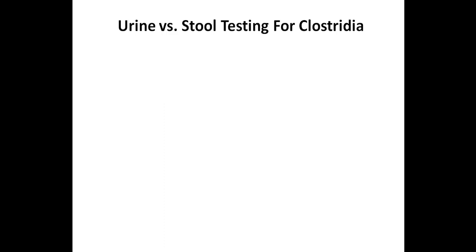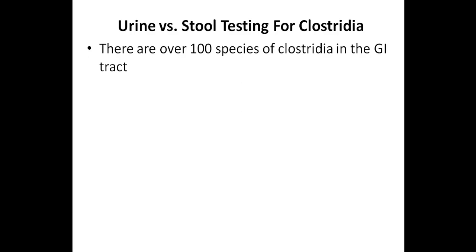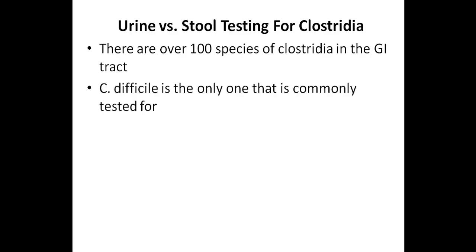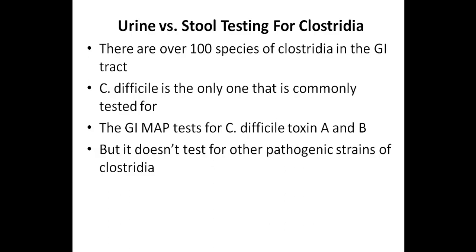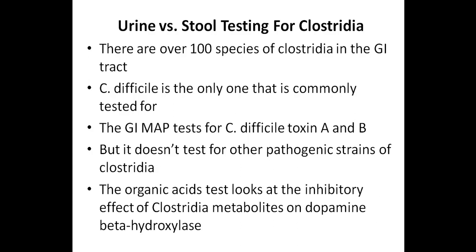Let's briefly talk about the difference between testing for Clostridia in the urine and stool. There are over 100 species of Clostridia in the gastrointestinal tract, and C. diff is the only one that is commonly tested for. The GI Map comprehensive stool panel tests for the two main toxins produced by C. diff — Toxin A and Toxin B. However, the general Clostridia marker under the normal bacteria flora section of the GI Map doesn't differentiate between pathogenic and non-pathogenic strains. So if someone is infected with a different pathogenic strain such as Clostridium botulinum, it won't be detected. The organic acids test not only tests for Clostridium metabolites, but it can also measure the inhibitory effects of those metabolites on the enzyme dopamine beta-hydroxylase — and you can tell if this enzyme is being inhibited if homovanillic acid is elevated.